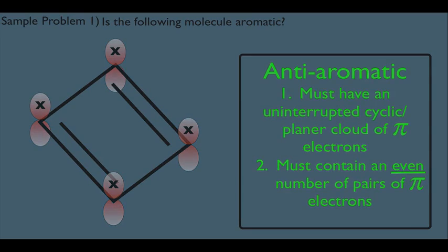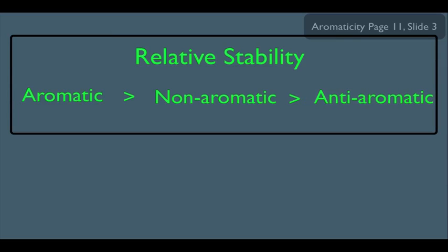So now let's look at the big picture here. From now on, in organic chemistry, there's technically only three general types of molecules. You have aromatic molecules, which are the most stable. Then you have non-aromatic molecules, which are less stable. And then you have anti-aromatic molecules, which are the least stable.